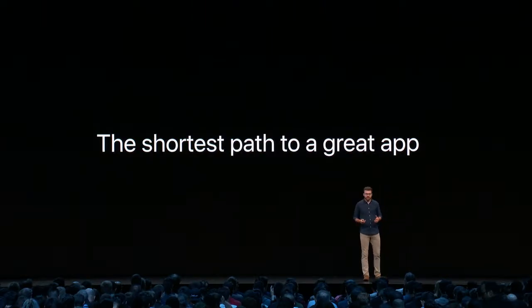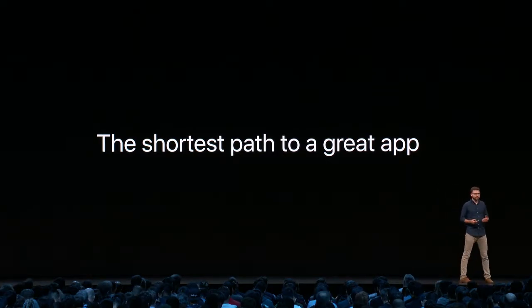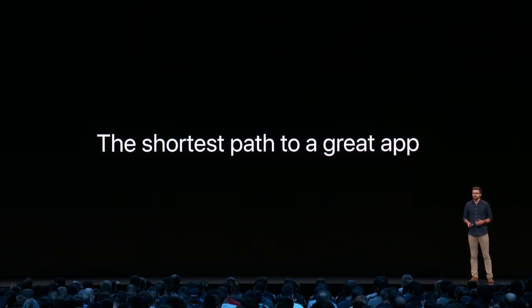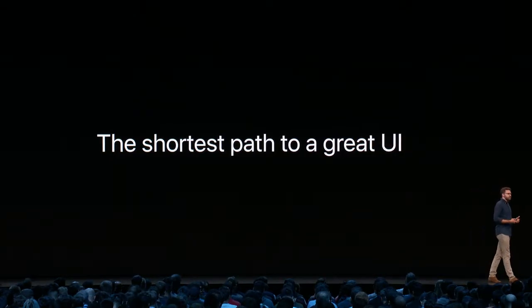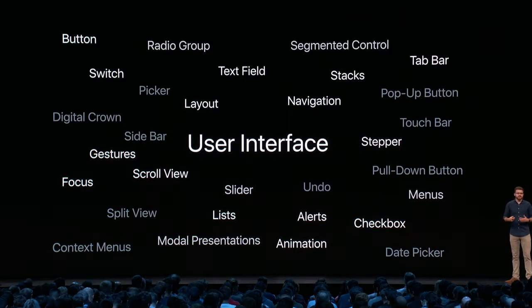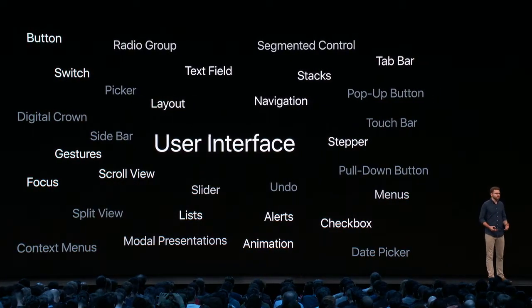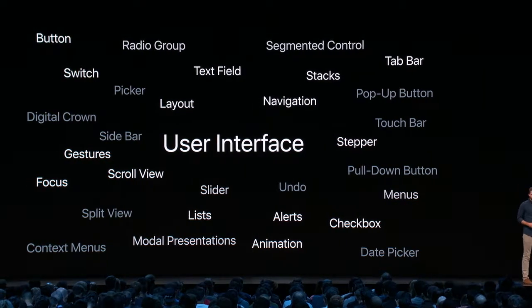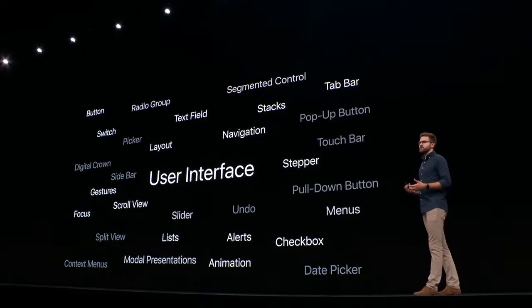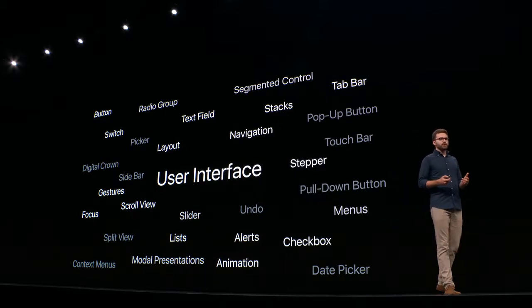SwiftUI is a new framework designed to give you the shortest path to building a great app, meaning the shortest path to building great user interfaces. It has all the basic components you'd expect from a UI framework: controls like buttons and text fields, layout containers like stacks and lists, drawing, animations, and gestures. SwiftUI even embraces platform-specific concepts like menus on the Mac, the digital crown on Apple Watch, and the Siri remote on Apple TV.